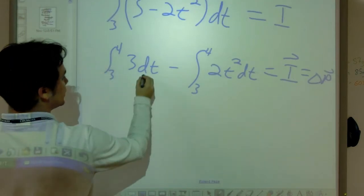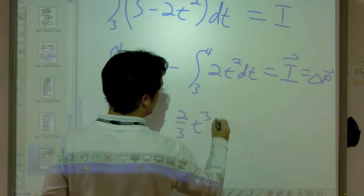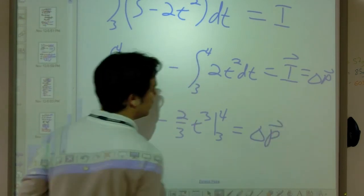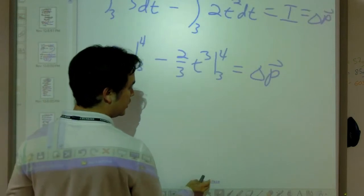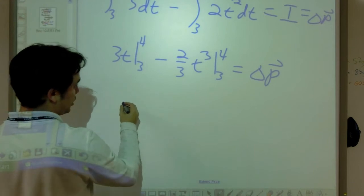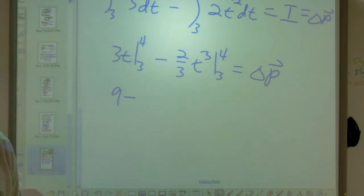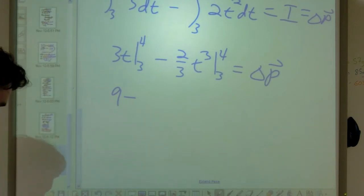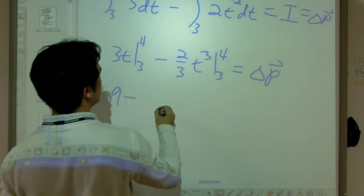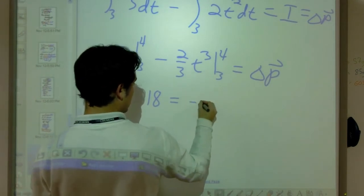I'm going to do this quickly. We've got three t evaluated from three to four minus two thirds t cubed, also evaluated from three to four. That's going to be equal to delta p. I'm going to cut out the impulse guy there as a middleman because we know that we're interested in our momentum. So I evaluate this. If I look at the three, I'm going to end up with nine minus, let's see, three cubed times two thirds, that's going to be 18, so minus 18. So this ends up with negative nine.